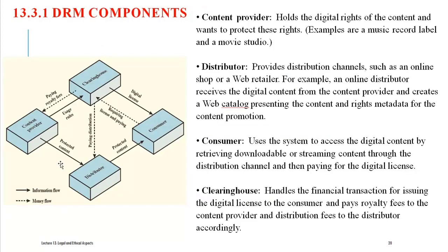There are four different DRM components. The first is the content provider — the person who is creating the content. For example, a book written by myself is intellectual property and people should pay for it. The content provider is the one who holds the digital rights of the content and wants to protect those rights. Examples include a music record label, a movie studio, or a book author.